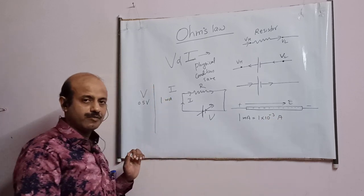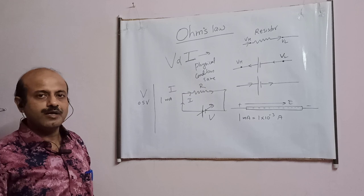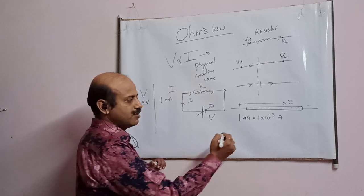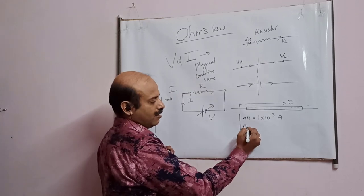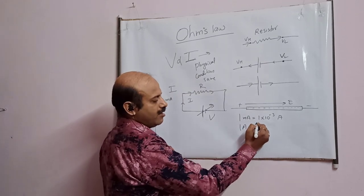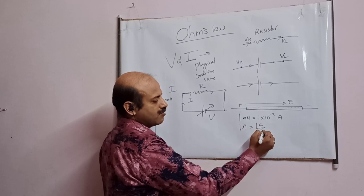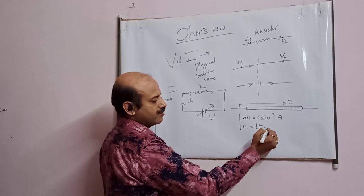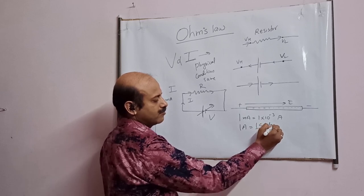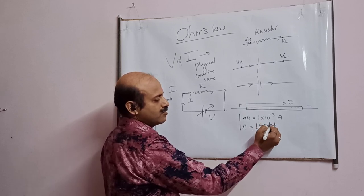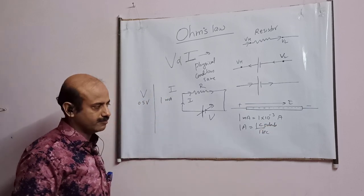It is a smaller unit because 1 ampere current is very high. Previously we have defined how much is 1 ampere current: 1 ampere current is when 1 coulomb of charge passes in 1 second. And this 1 coulomb is a very high number of charges.